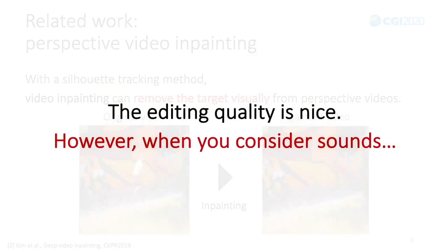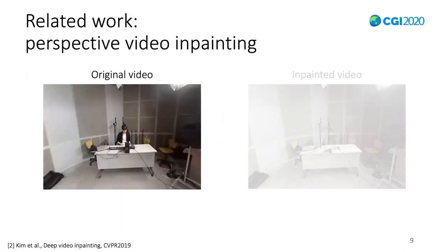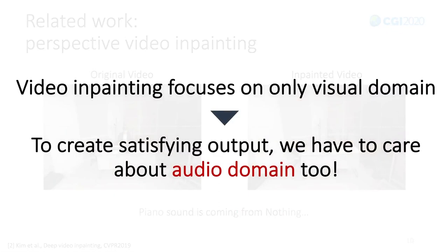The editing quality is nice. However, when you consider sounds, a problem appears. Please see this original video. There is a player playing the piano. This is the inpainted result. Even though the video inpainting is applied to it, there is still piano sound coming from a place where there is nothing. This is an unnatural output. So, video inpainting focuses only on the visual domain — we have to care about the audio domain too to create natural outputs.